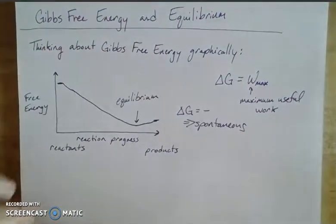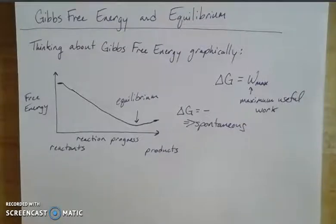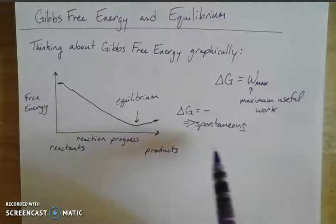And again, equilibrium in a thermodynamic context, thinking about this as the equilibrium of the energies of my reactants and products. This is going to be the lowest, the minimum point on my curve. So how would this look different if I was thinking about a non-spontaneous process?